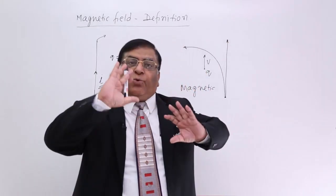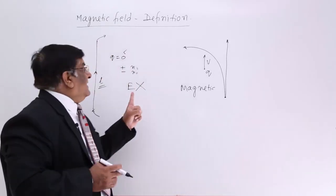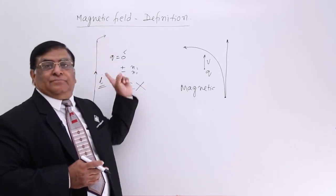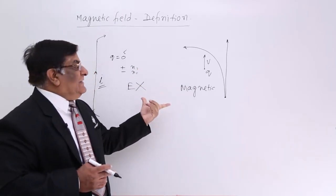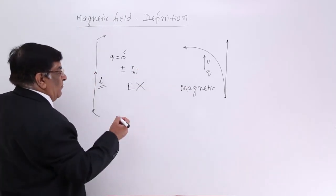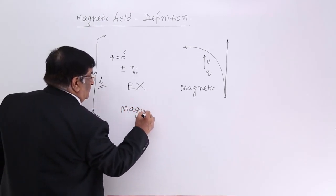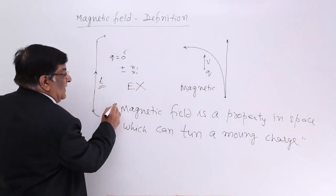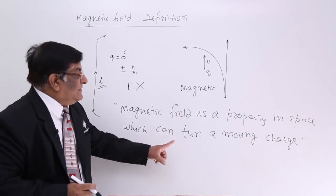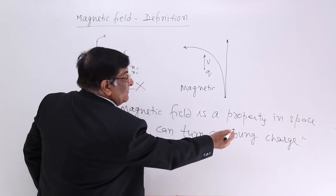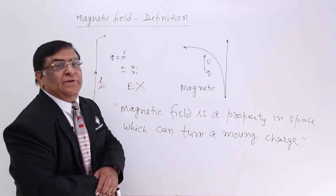This is the definition of magnetic field — not the old definition that it is the field created by a magnet, because inside the magnet there is also a current flowing, and because of that current this field is created. So we have to define it again, and this is the new definition. Magnetic field is a property in space which can turn a moving charge. That's all.